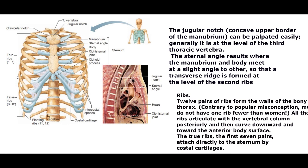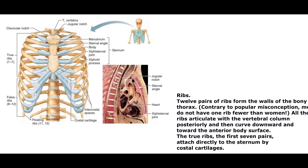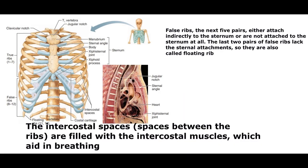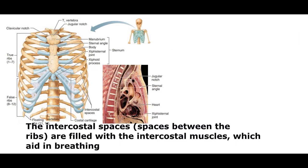Twelve pairs of ribs form the walls of the bony thorax. Contrary to popular misconception, men do not have one rib fewer than women. All ribs articulate with the vertebral column posteriorly and then curve downward and toward the anterior body surface. The true ribs — the first seven pairs — attach directly to the sternum by costal cartilages. The false ribs — the next five pairs — either attach indirectly to the sternum or are not attached at all. The last two pairs of false ribs lack sternal attachments, so they are also called floating ribs. The intercostal spaces, between the ribs, are filled with the intercostal muscles, which aid in breathing.